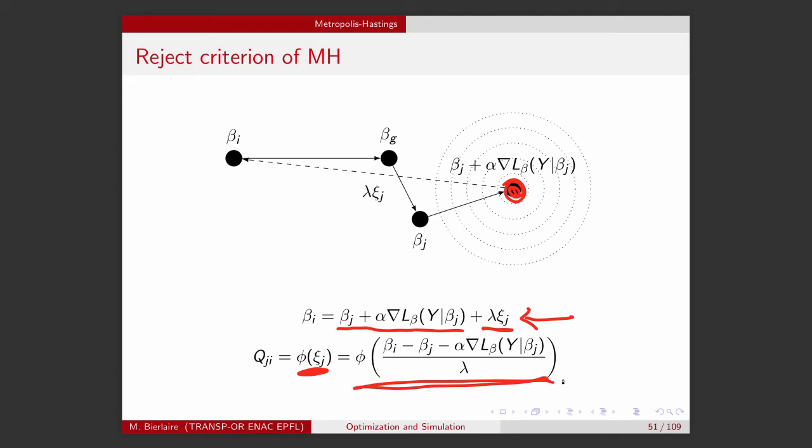So this is the formula for the backward probability. And as you can see, this is definitely different from the forward probability.